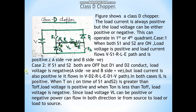The circuit diagram of Class D chopper is shown in the figure. S1 and S2 are thyristor switches. When S1 and S2 are on, the load voltage is positive — that means point A is positive and B is negative — and load current flows through the load from point A to point B, so load current is also positive.